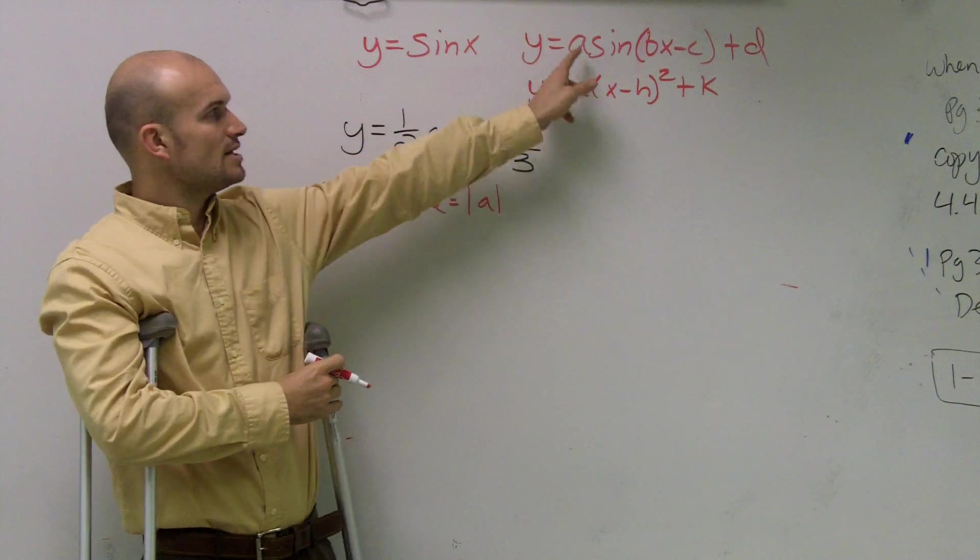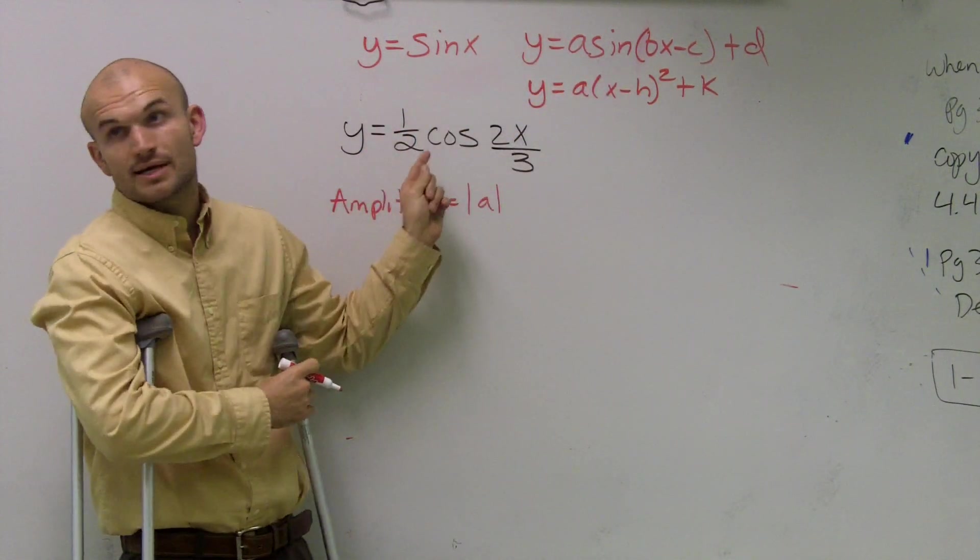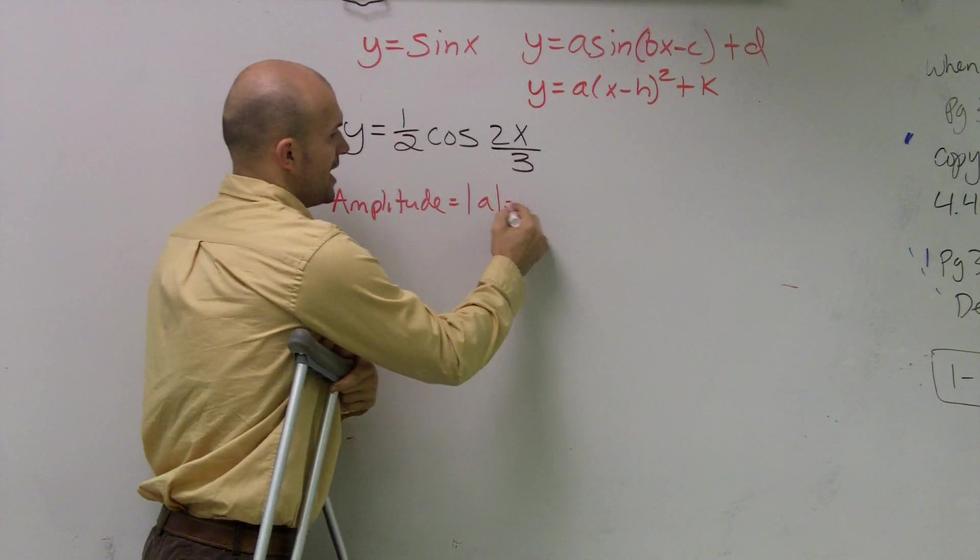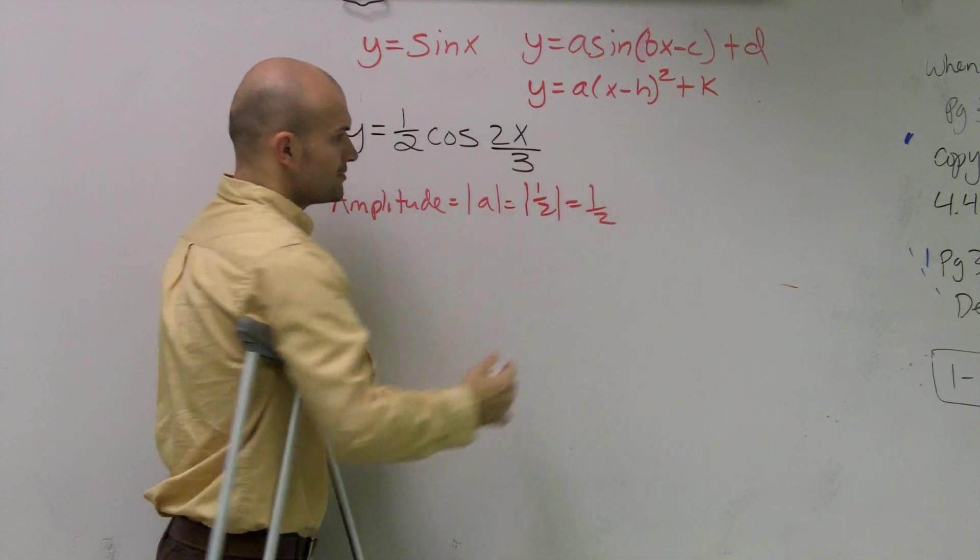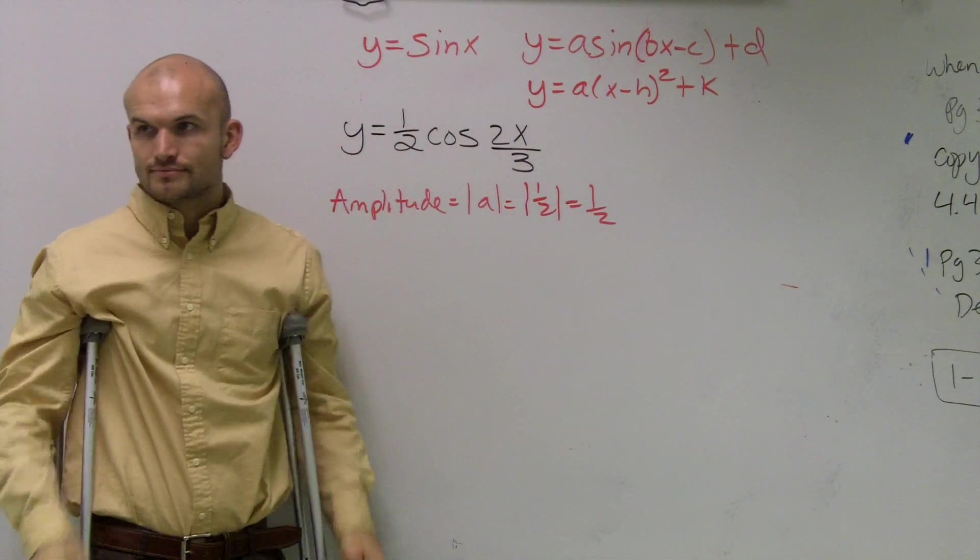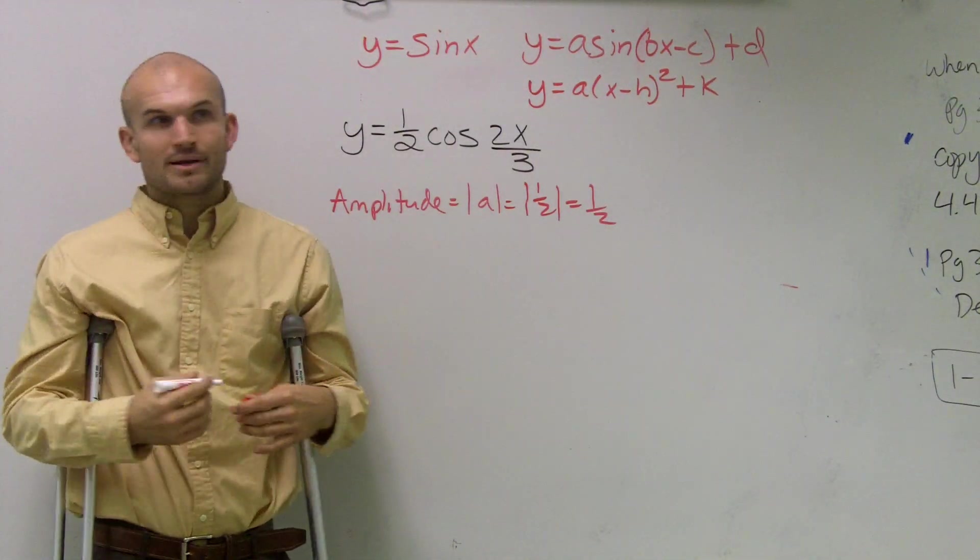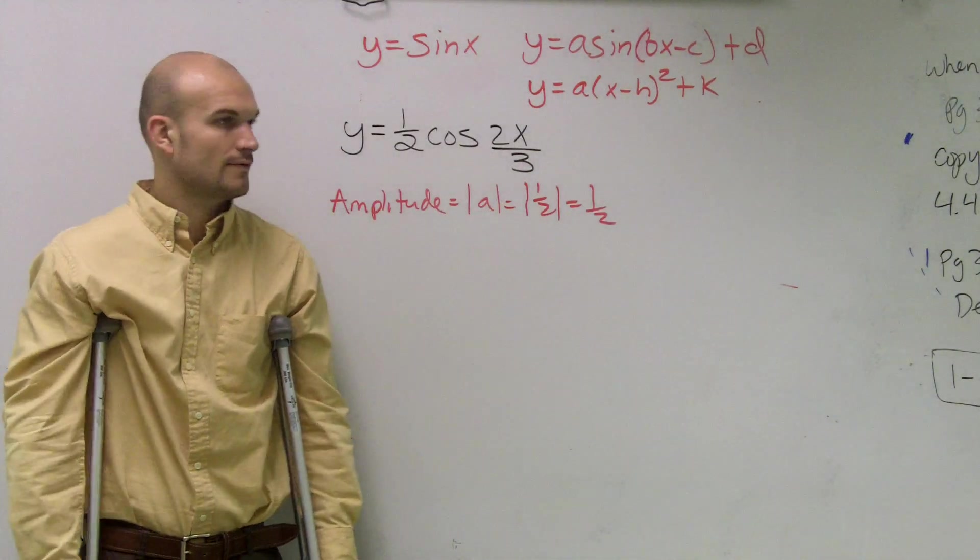So I look at this and I say, what is the number that's in front of my function? And I look, and it doesn't matter if it's sine or cosine. You look and say, oh, 1/2 is in front of there. So the absolute value of 1/2 equals 1/2. Done. If it was negative, it still would have been a positive 1/2. It's easy. Got it?